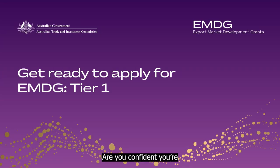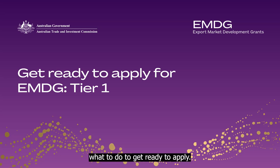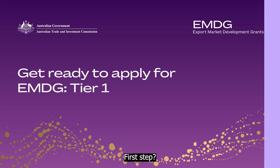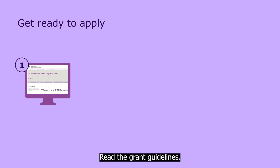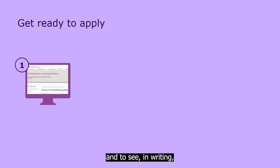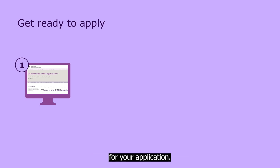Are you confident you're eligible for Tier 1 EMDG? Then here's what to do to get ready to apply. First step, read the grant guidelines. Use them to reconfirm your eligibility and to see in writing what you need to get together for your application.